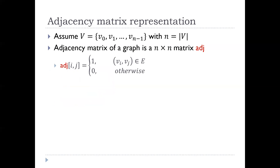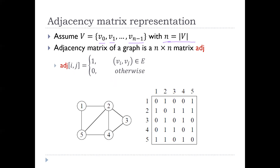The first one is the adjacency matrix representation. Let's say we have a graph where the nodes are v0, v1, to vn-1, so we have n nodes. A graph is basically a node set with some pairs of nodes — some edges. I need to represent both of them: who and who are connected. You can store this in a matrix form, the so-called adjacency matrix.